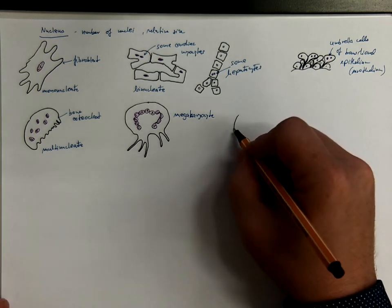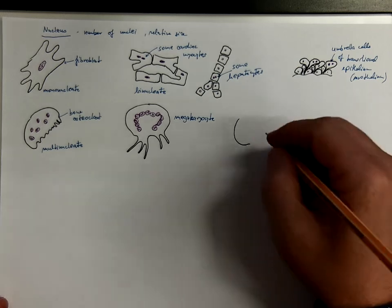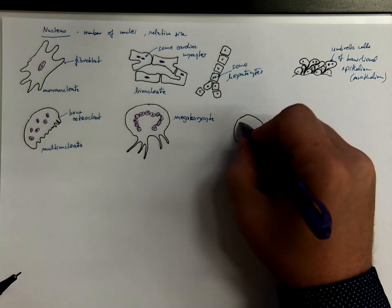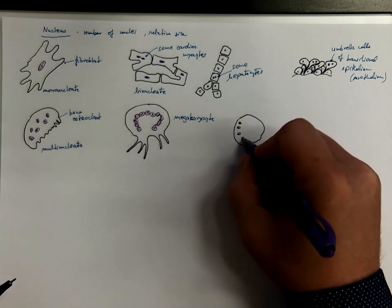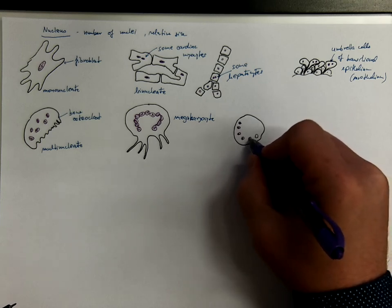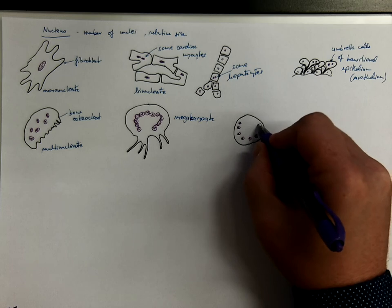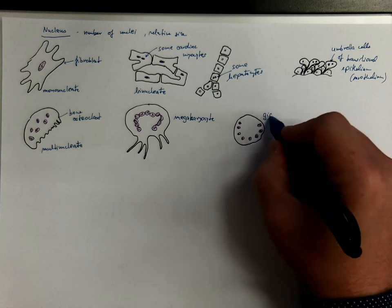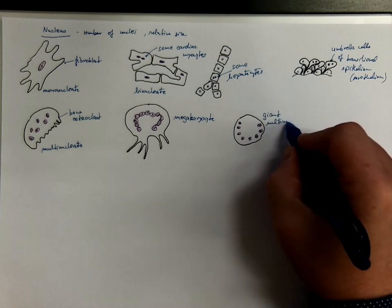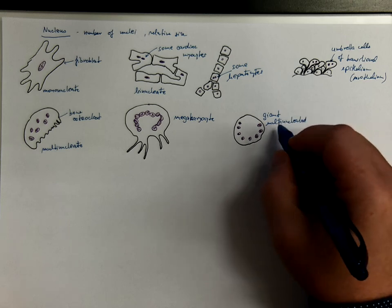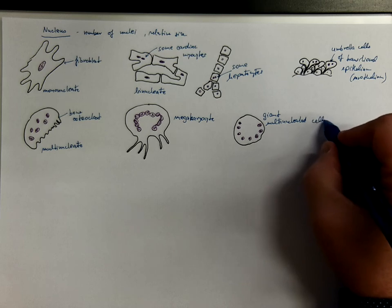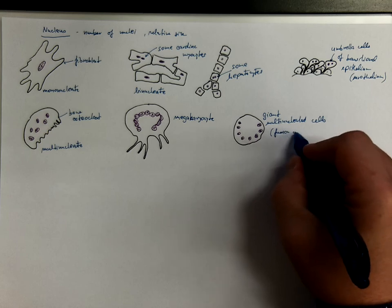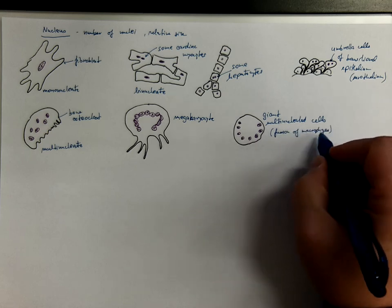Another example could be giant multinucleated cells. That's the name. The nuclei might be found in the periphery forming such a ring, or they could be in various other configurations. These are actually fused macrophages. Giant multinucleated cells. It's a fusion of several macrophages, phagocytes.